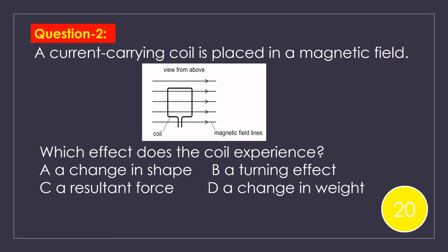Try this second question. A current carrying coil is placed in a magnetic field. Which effect does the coil experience? Option A, a change in shape. Option B, a turning effect. Option C, a resultant force. Option D, a change in weight. Your time starts now.